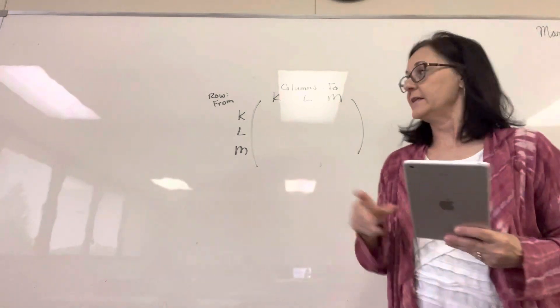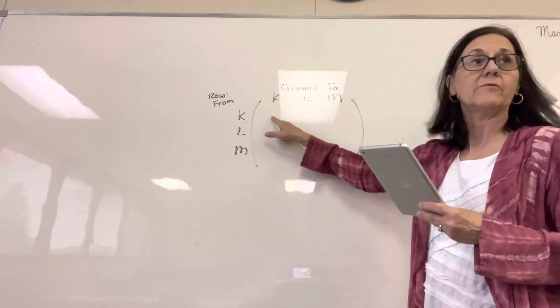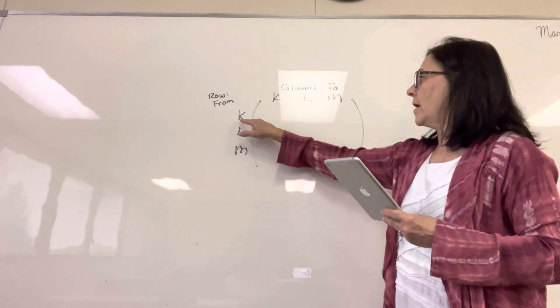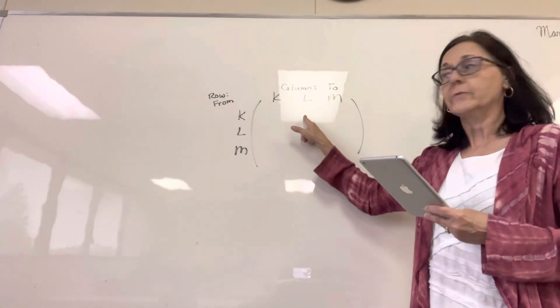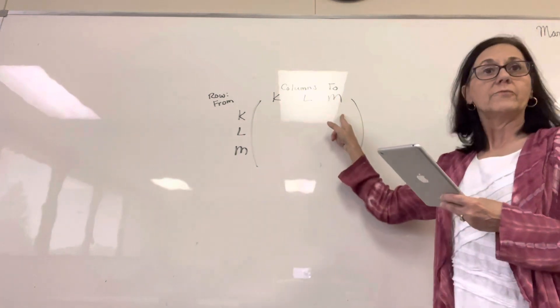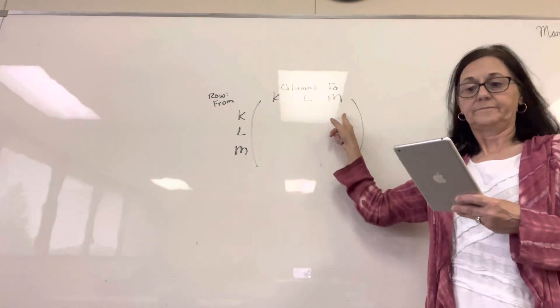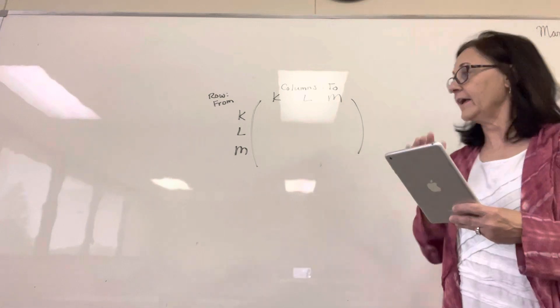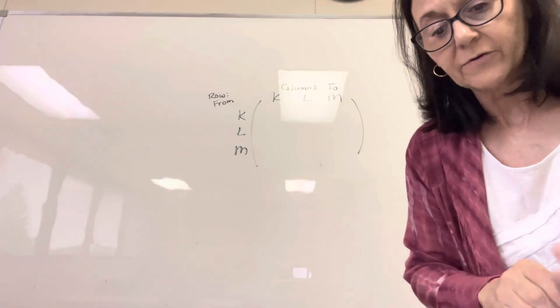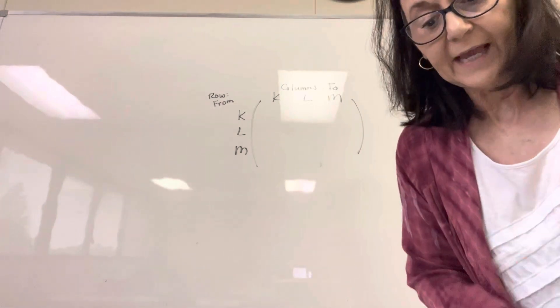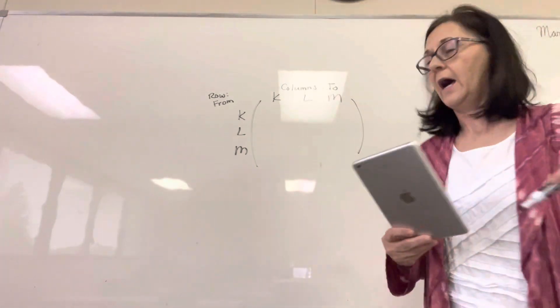So look at the image. From K to K goes in row one, column one. From K to L goes in row one, column two. From K to M, row one, column three. So looking at the image, how many arrows go from K to K? Is there any? None.